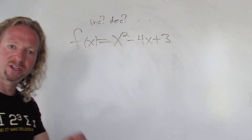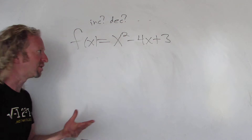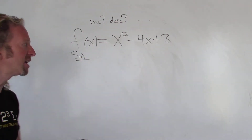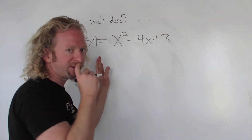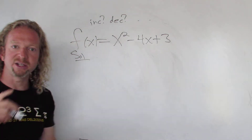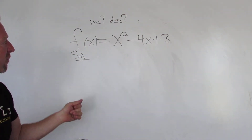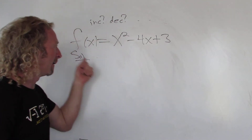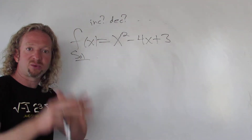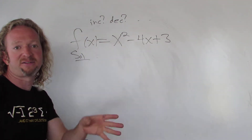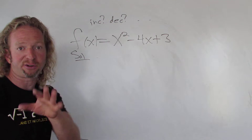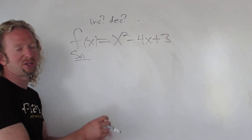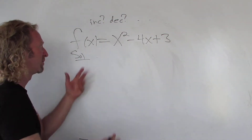To find where a function is increasing or decreasing, the first thing you do — the very first step — is take the derivative and set it equal to zero. You're basically looking for critical numbers, or places where the derivative is undefined. Even vertical asymptotes — you'll want to care about those as well. So: critical numbers and any vertical asymptotes.